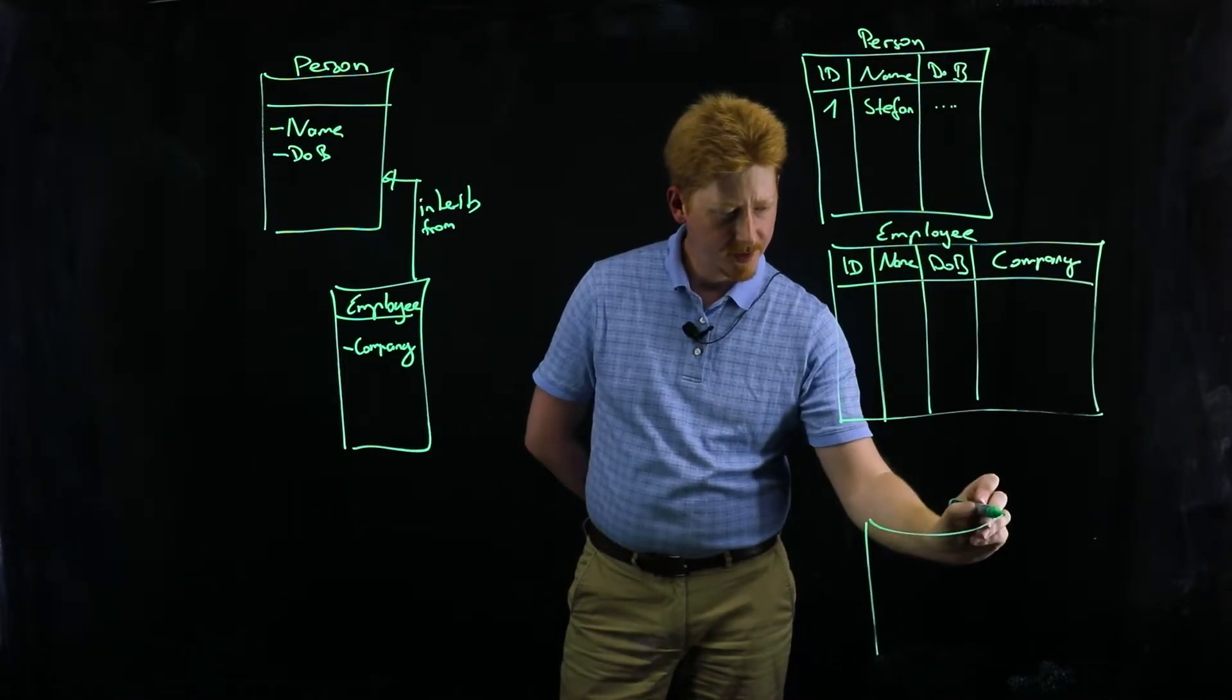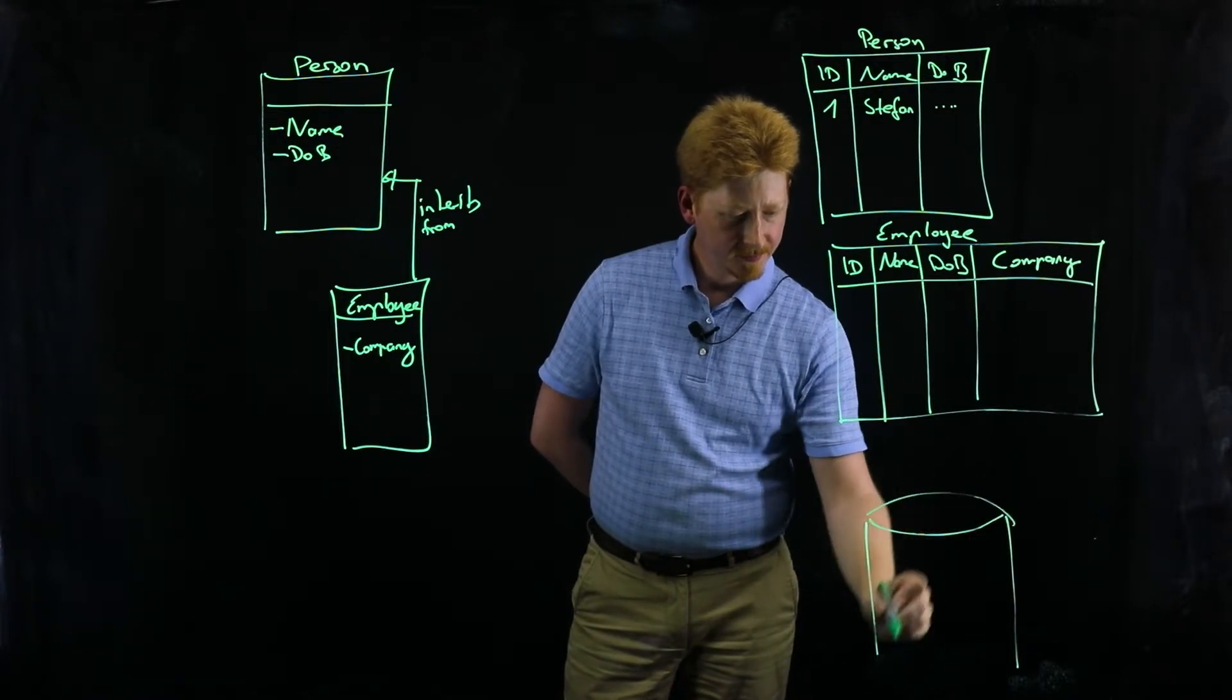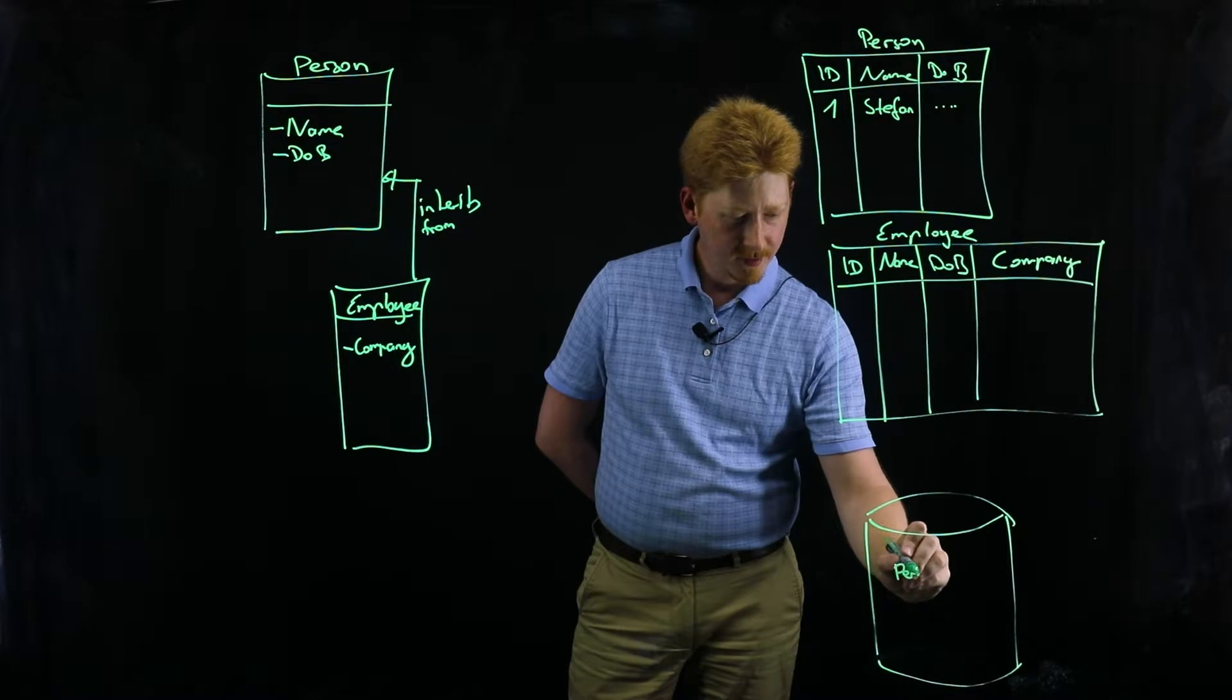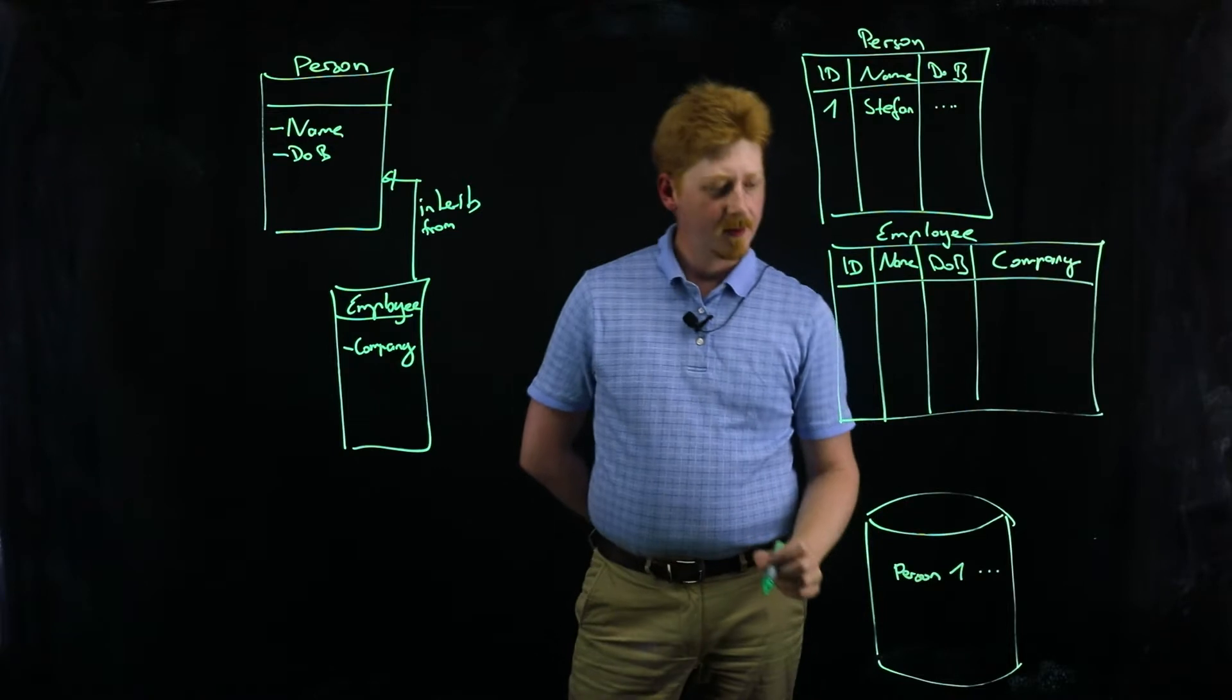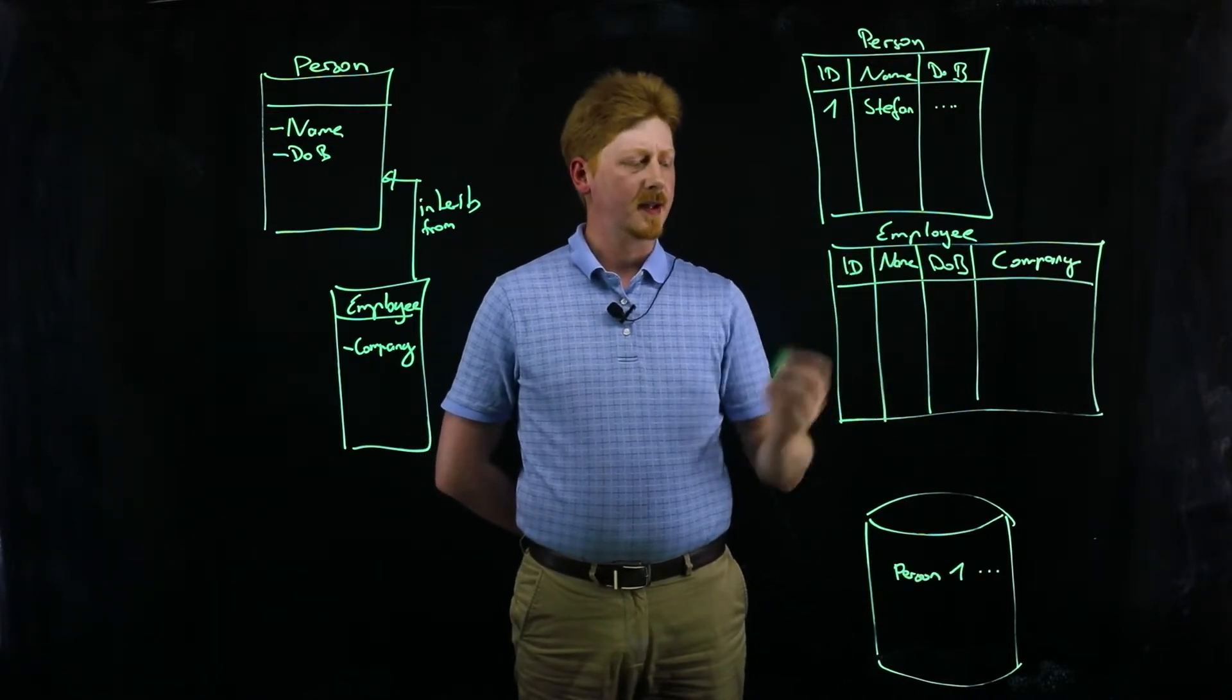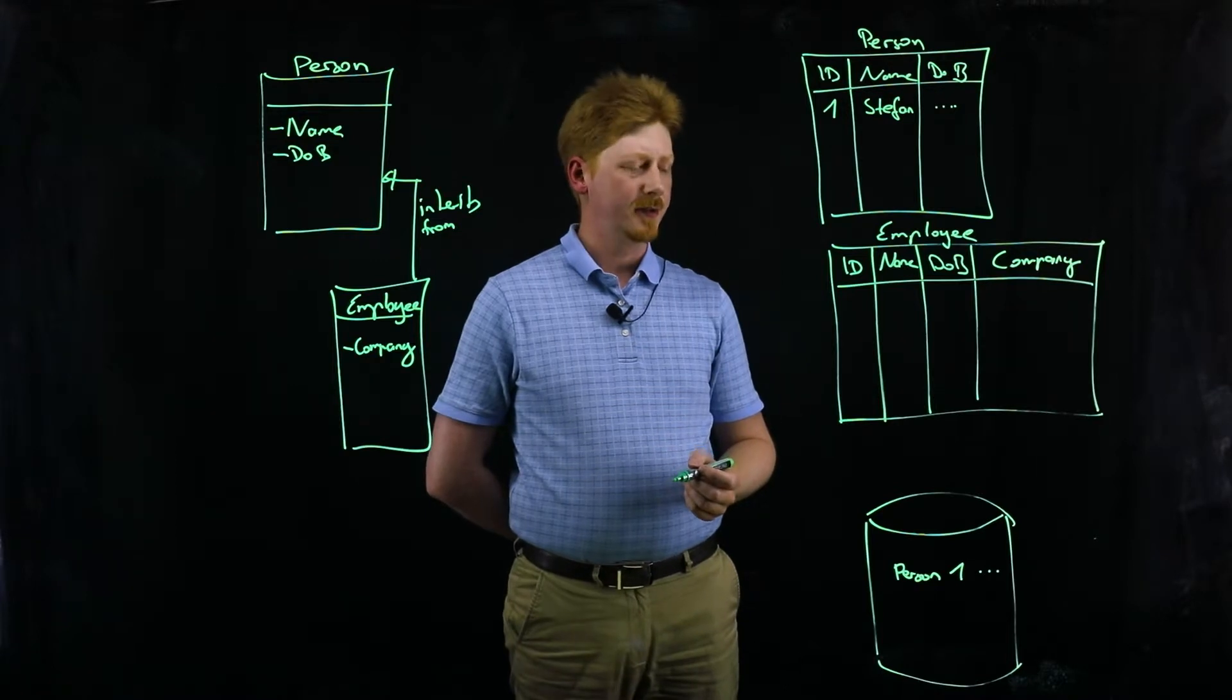In the storage, what happens is that we store a person with the ID 1, and then all the fields that we've populated, like the name Stefan and whatever date of birth we chose.